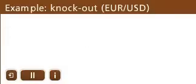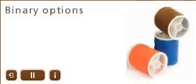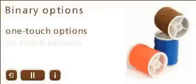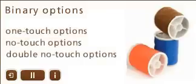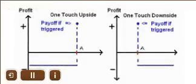Binary options come in three basic formats: one-touch options, no-touch options, and double no-touch options. A one-touch option is an option that automatically pays a set amount when the underlying currency pair trades at or beyond a specified price level, known as the barrier, before expiry. In other words, you can make money on a one-touch option if the currency pair touches a predetermined price.